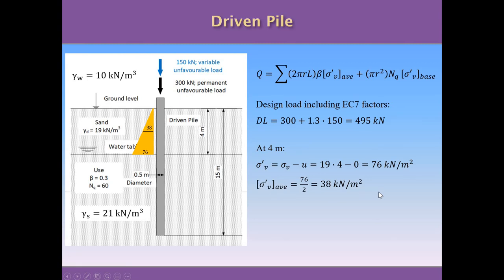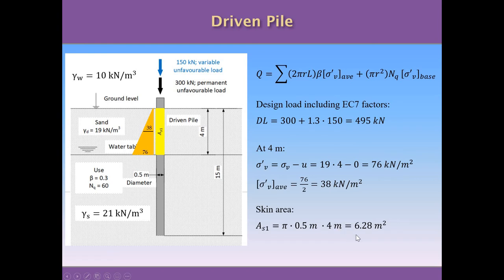After calculating the average effective stress, we calculate the skin area for the first layer — the lateral area of the pile in contact with the first layer — which is π × diameter × 4 m = 6.28 m².